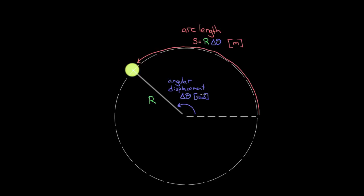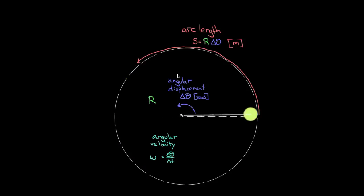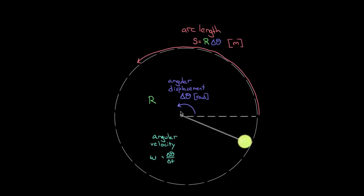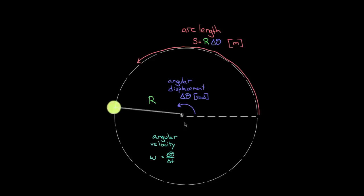The next relationship relates the angular velocity to the regular velocity. The angular velocity, defined as angular displacement per time, is the rate at which something is rotating through a certain amount of angle, represented by the Greek letter omega. So the angular velocity represents the rate at which something is rotating in a circle — slow rotation means small omega, fast rotation means large omega. Obviously the speed and angular velocity are related, because the higher the angular velocity, the higher the speed. But what exactly is that relationship?